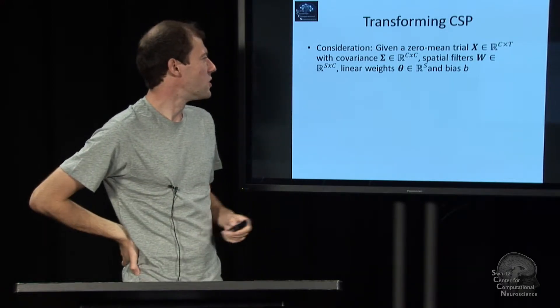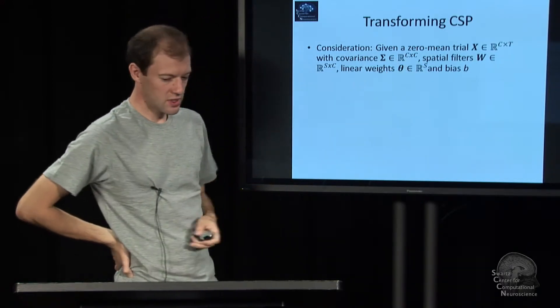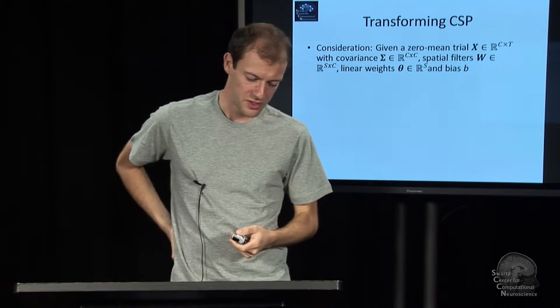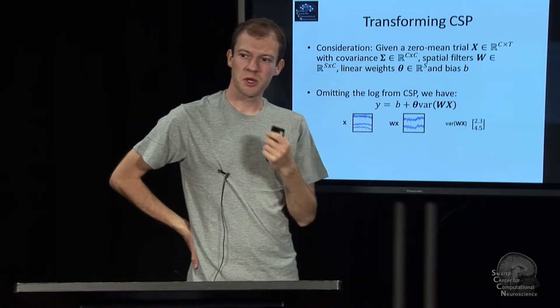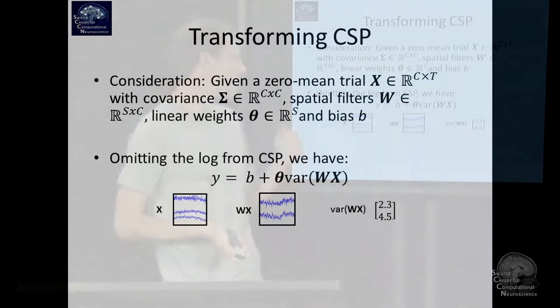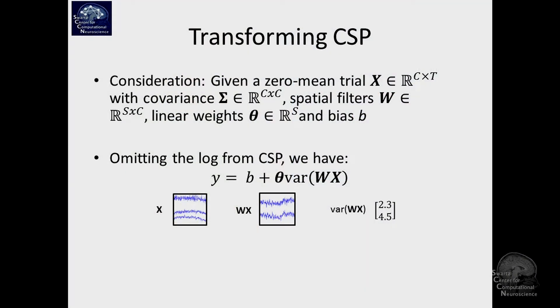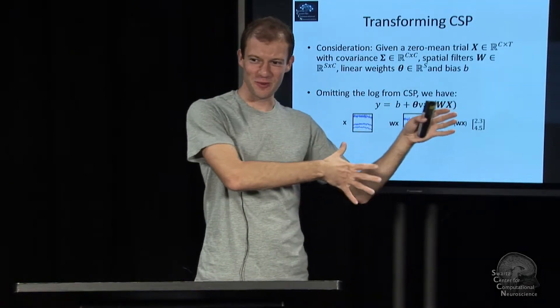You remember the CSP prediction function: take the data X, multiply by a spatial filter, take the variance of that, and then there was a logarithm because it improves the distribution quality. We have to drop the log; it cannot travel with us into the realms we want to go.